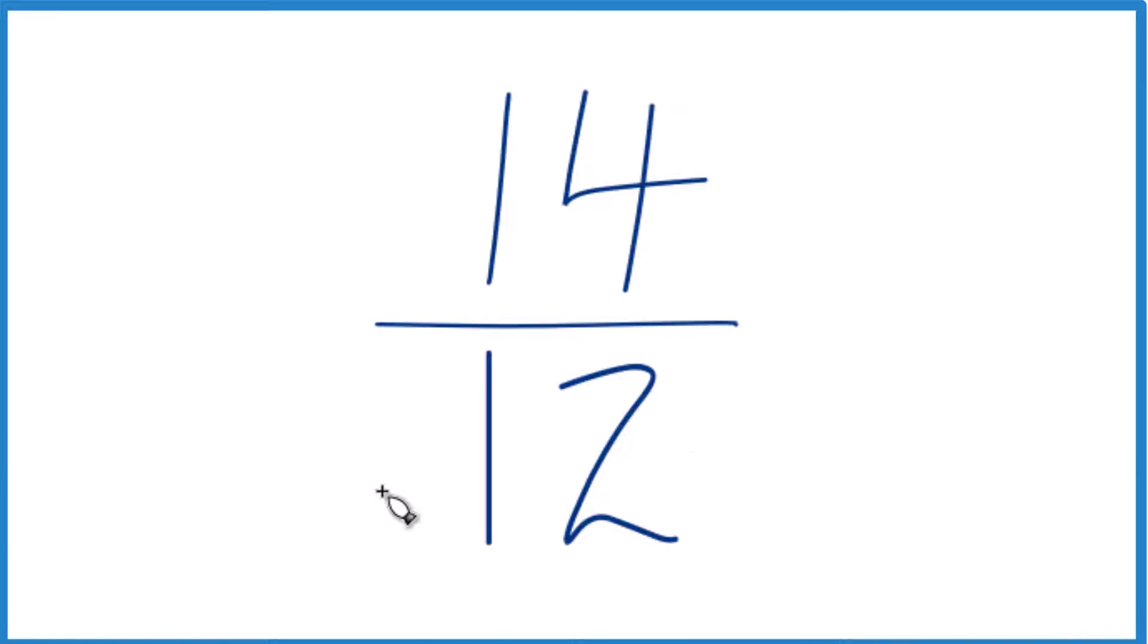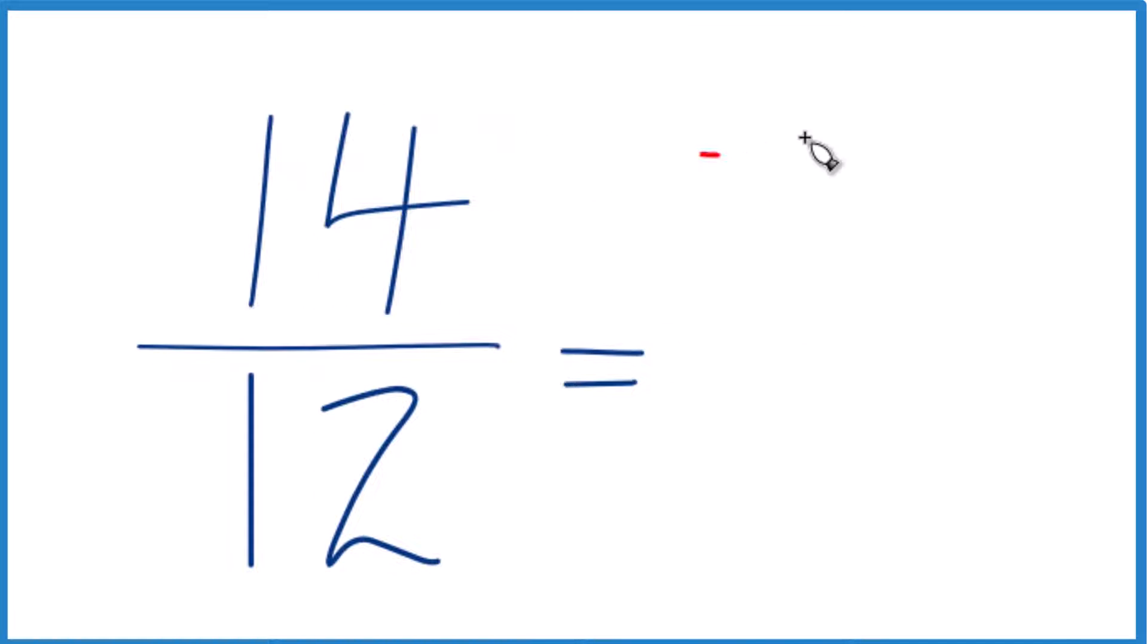Since these are both even numbers, let's divide both by 2. 14 divided by 2 is 7, and 12 divided by 2 is 6.